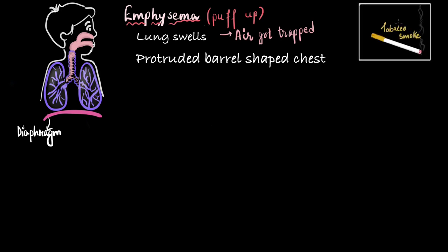80% of emphysema is caused by tobacco smoke and the rest by very high air pollution or chemical fumes. Now, let's see what these fumes and smoke do to cause emphysema.